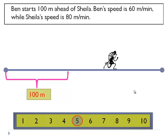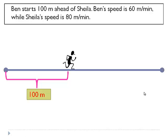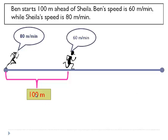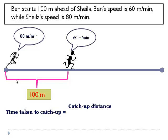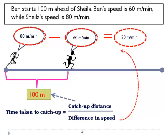Let's go back in detail and see how this works out. Ben starts 100 meters ahead of Sheila, so the catch-up distance is 100 meters. Ben's speed is 60 meters per minute and Sheila's is 80 meters per minute. The time taken to catch up is given by the catch-up distance, 100 meters, divided by the difference in speed: 80 minus 60 equals 20 meters per minute. So 100 divided by 20 gives us 5 minutes.